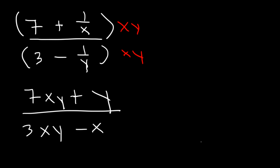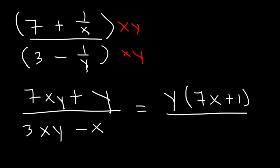The last thing we can do is factor. In the numerator, we can take out the GCF, which is y, and that will leave us with 7x plus 1. In the denominator, we can take out an x, which will leave us with 3y minus 1. And so that's the answer for this problem.